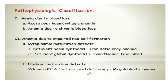Basically anemia can be classified in so many ways, and one way of classifying it will be: it may be due to blood loss, which is very common, and it can be acute post-hemorrhagic anemia or anemia due to chronic blood loss.